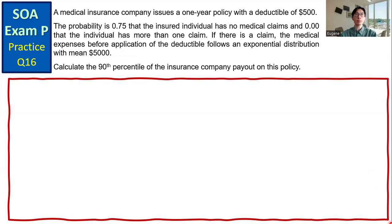SOA Exam P, Practice Question Number 16. A medical insurance company issues a one-year policy with a deductible of $500. The probability is 0.75 that the insured individual has no medical claims, and the probability is zero that the individual has more than one claim. If there is a claim, the medical expenses before application of the deductible follows an exponential distribution with mean $5,000. Calculate the 90th percentile of the insurance company payout on this policy.